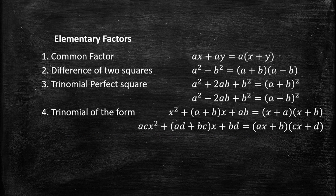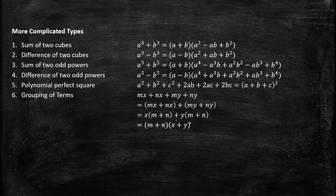We have here the elementary factors: the common factor, the difference of two squares, the polynomial perfect square, and the polynomial of a given form. Take note of these elementary factors because we'll be using them for the entire duration of this class. We also have the more complicated types: sum of two cubes, difference of two cubes, sum of two odd powers, difference of two odd powers, polynomial perfect square, and grouping terms.